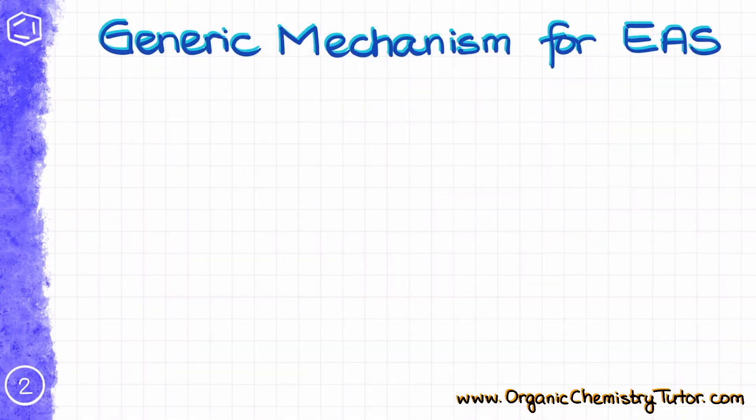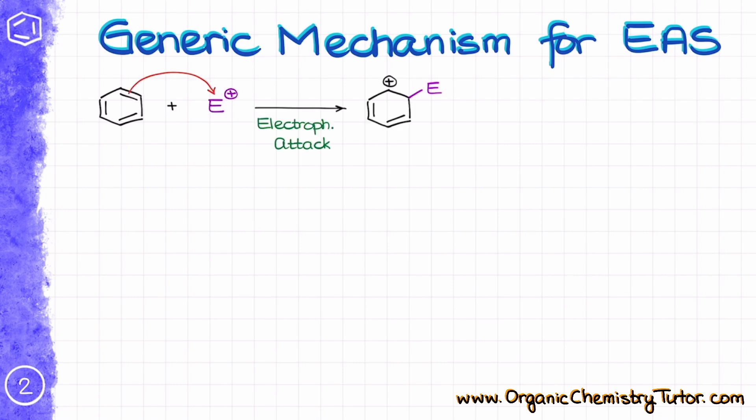Let's look at the generic mechanism for the electrophilic aromatic substitution. We're going to start by reacting the benzene molecule with some sort of electrophile. The nature of the electrophile is irrelevant for the moment — the only thing we need to know is that it is a strong one, because aromatic compounds are very stable. To attack the pi system and break aromaticity we need something very strong.